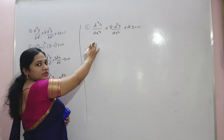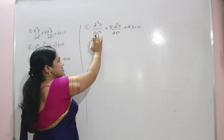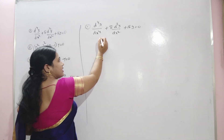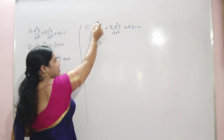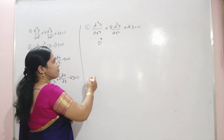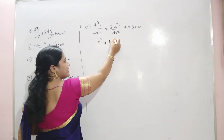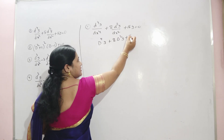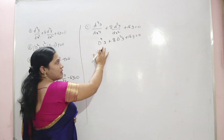First, write down the given differential equation in symbolic form. The symbolic form is: D⁴y + 8D²y + 16y = 0.